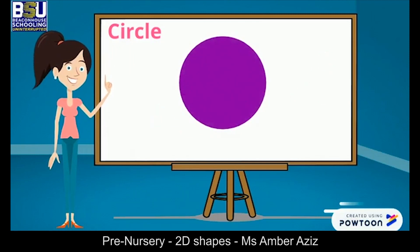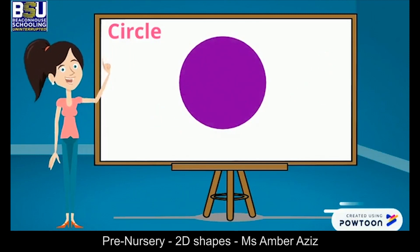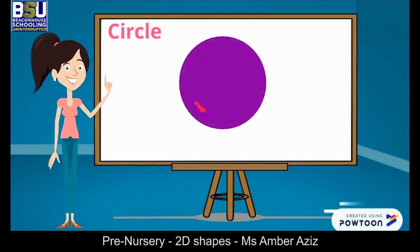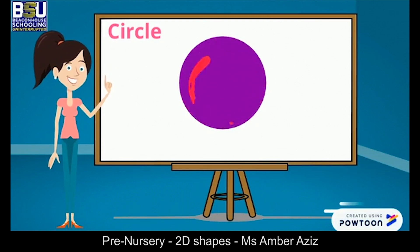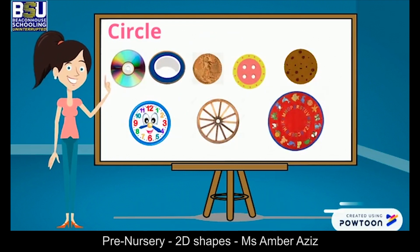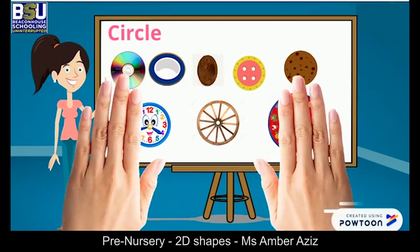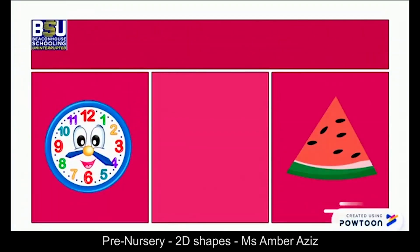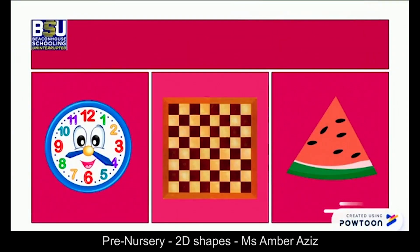Do you know which shape is this? It's a circle. It has one curved side and no vertices. It is round. Let's have a look at things that are circle in shape. Look at these objects — can you spot a circle for me?